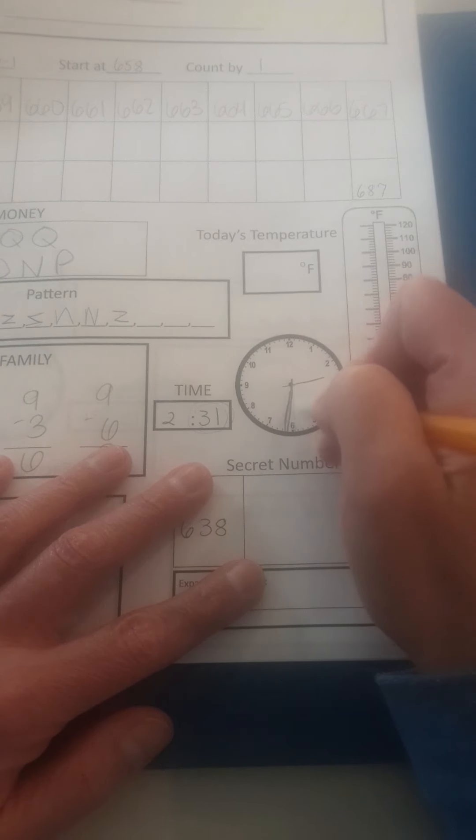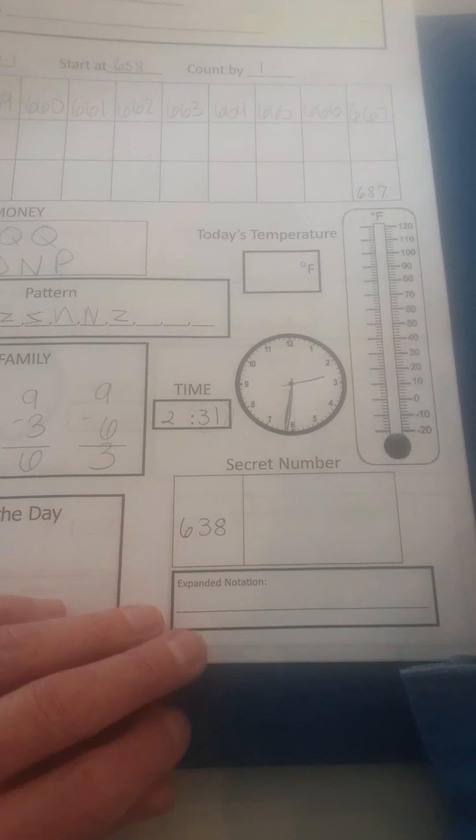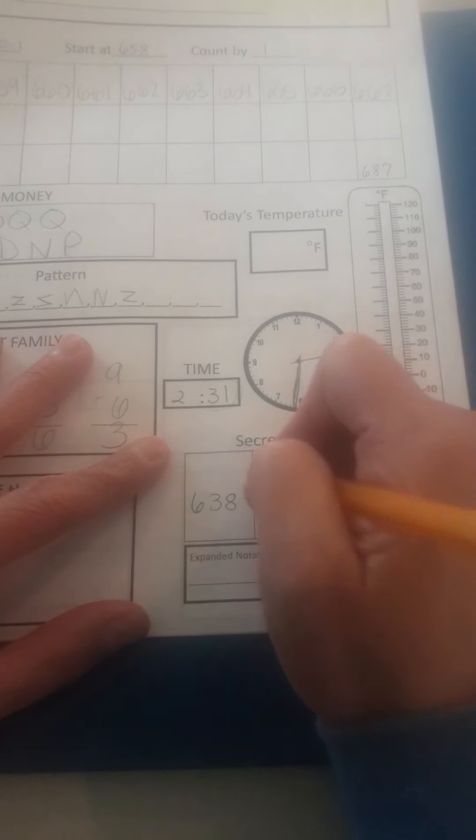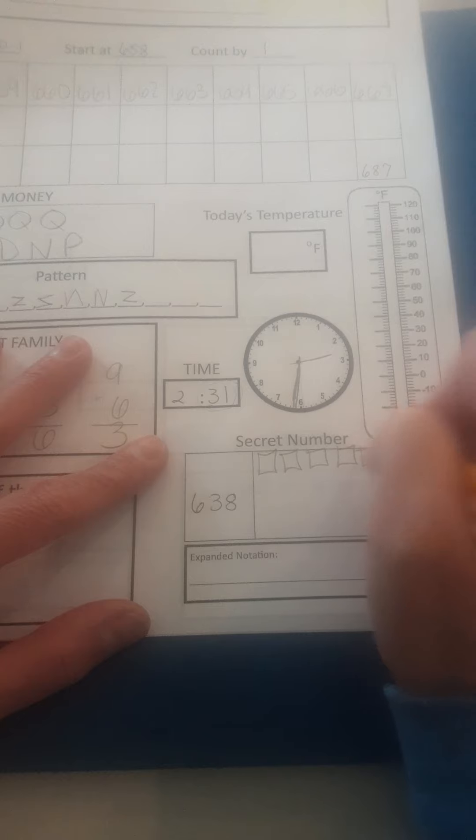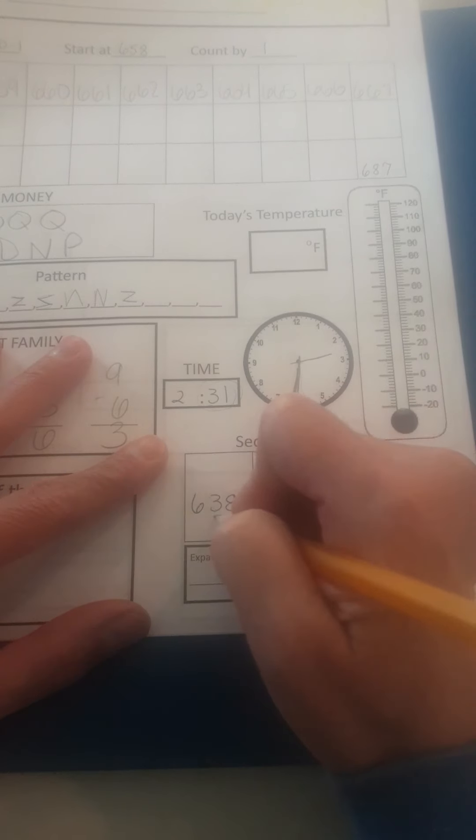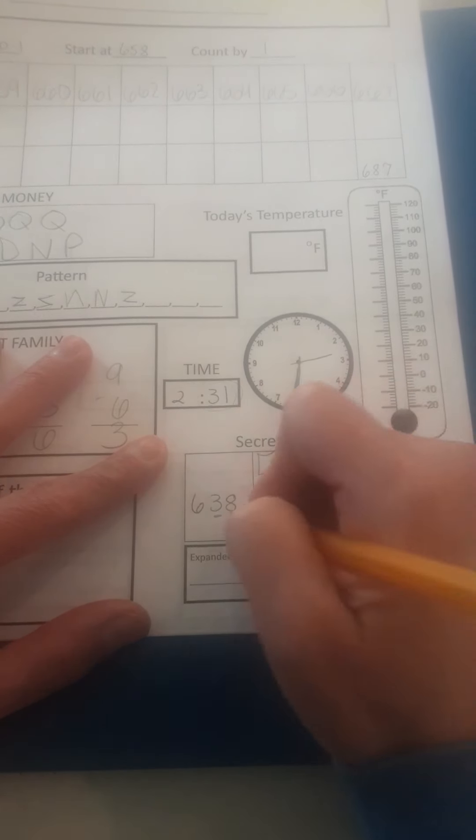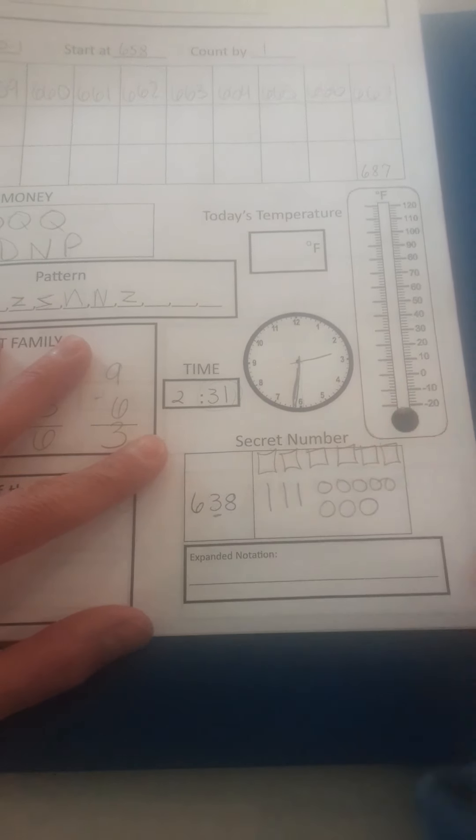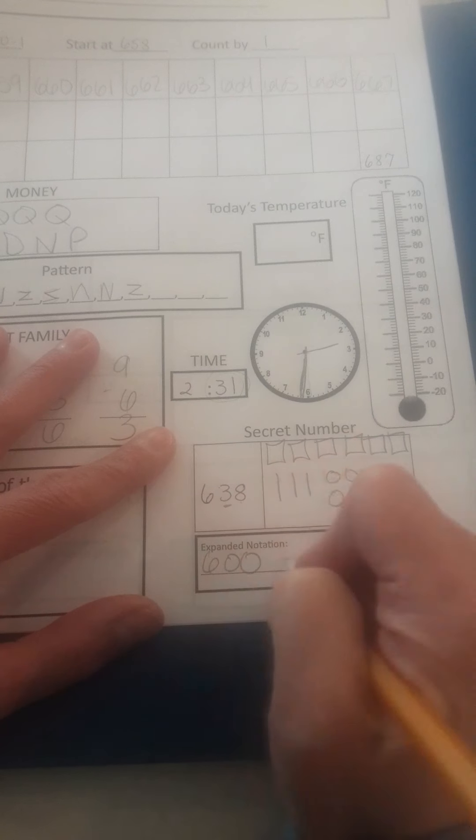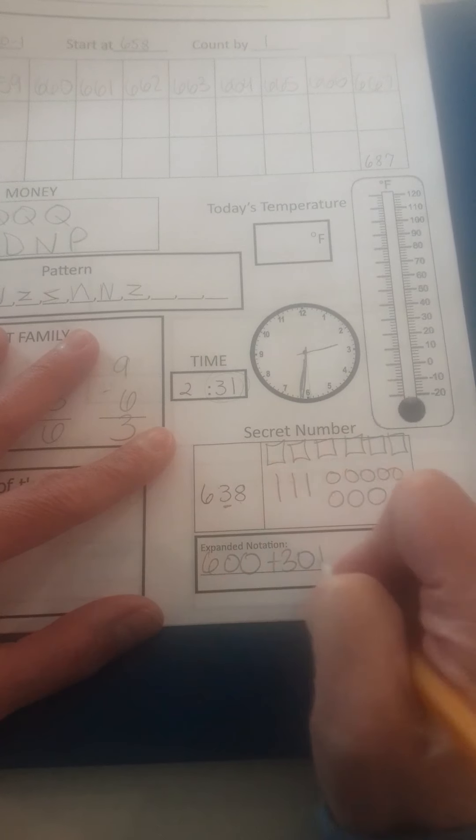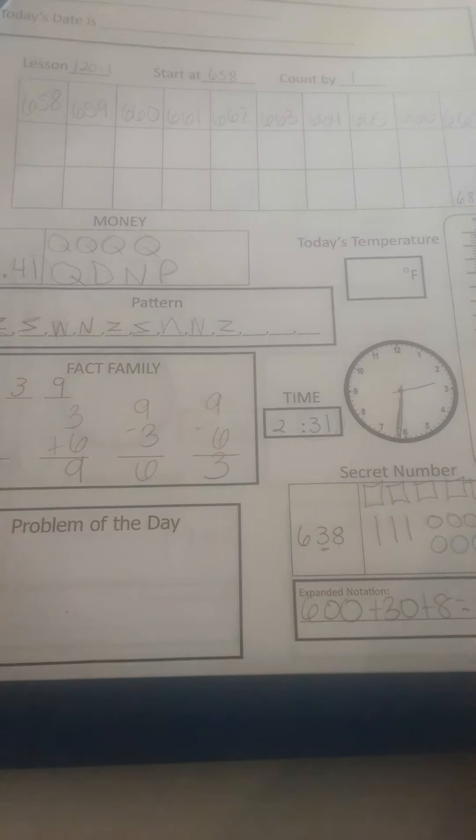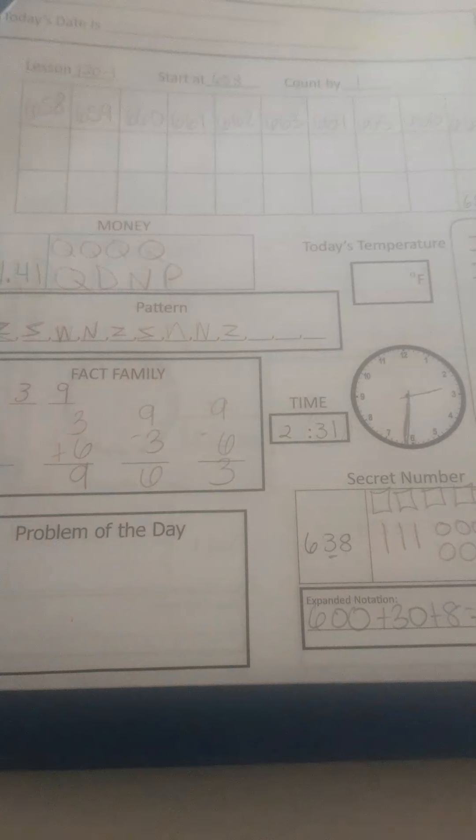Secret number 638. Six hundreds, three tens, eight ones. Expanded form: 600 plus 30 plus 8 equals 638.